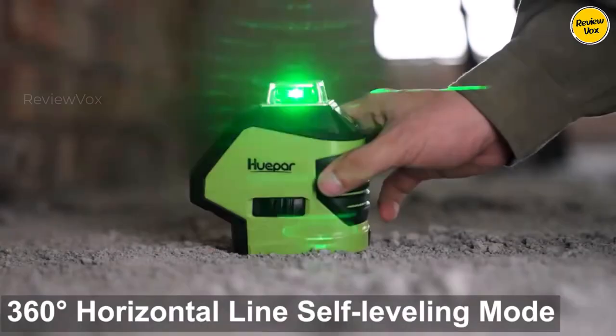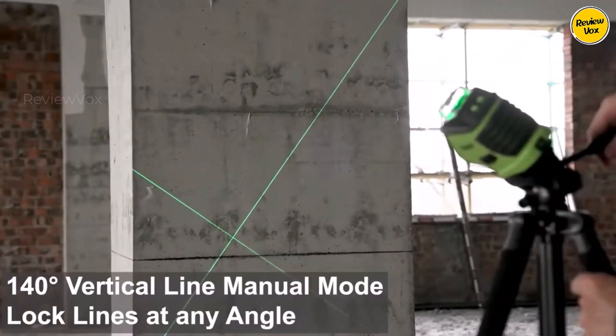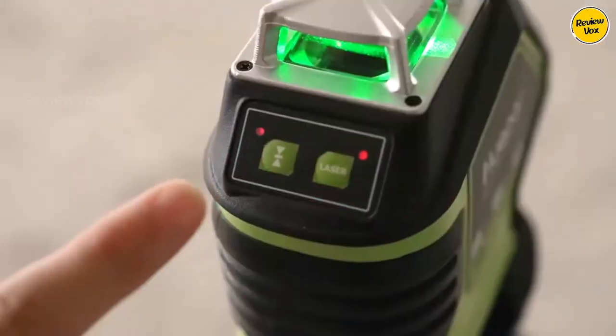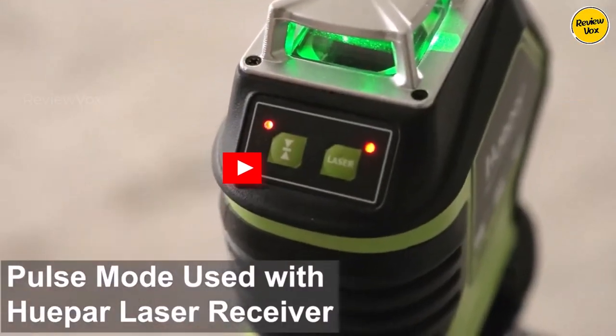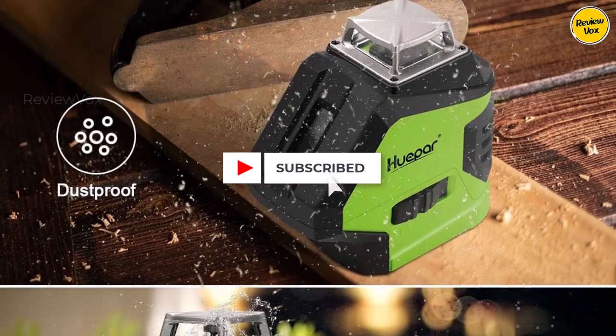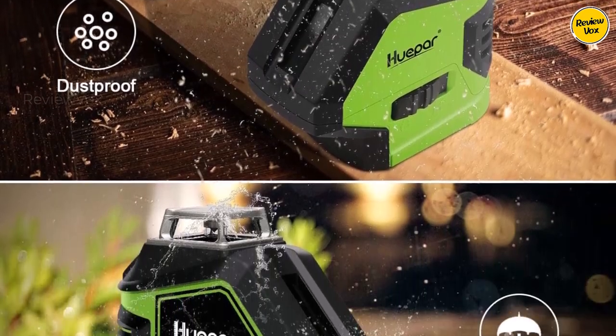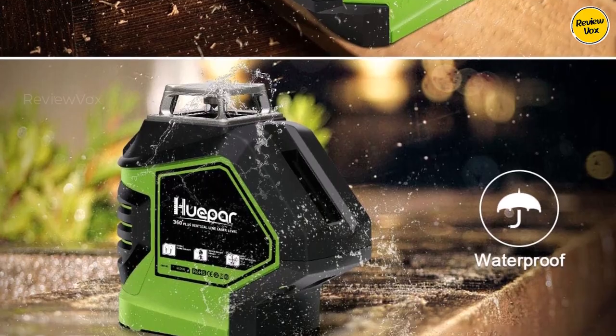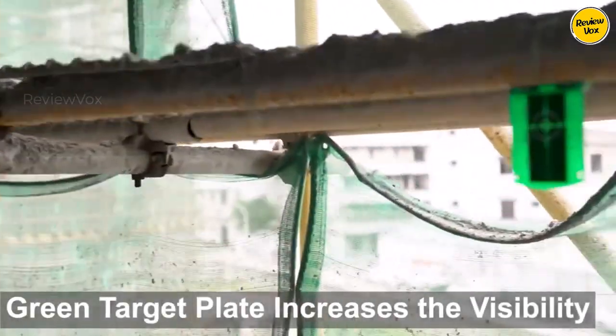The device features pendulum auto-leveling, lockable for angle work, and an additional up-down red laser for a plumb-line effect with dots above and below itself. Its compact, portable, and dust-proof design, coupled with four AA batteries and a removable magnetic mount, contributes to a robust and user-friendly construction.